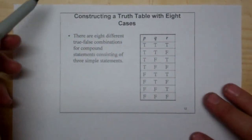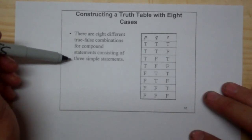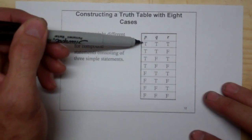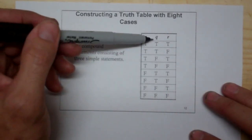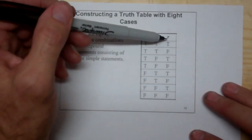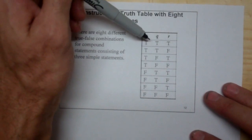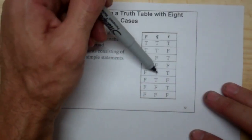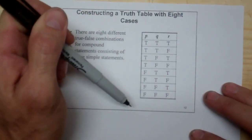When we combine a truth table with three statements, there are eight different true-false combinations. P starts with four trues and then four falses. For Q, it looks like our old P: true-true-false-false, then repeated true-true-false-false. For R, it alternates true-false-true-false-true-false-true-false. So we get all possible combinations: all three true, then two trues, down to all false.